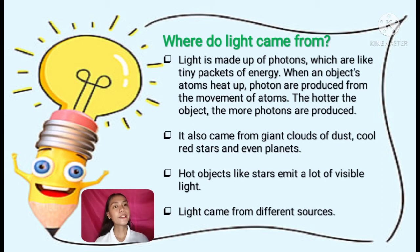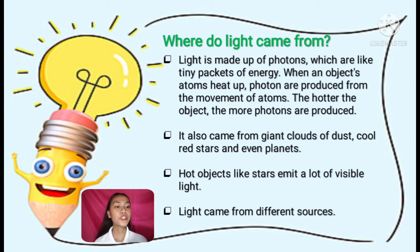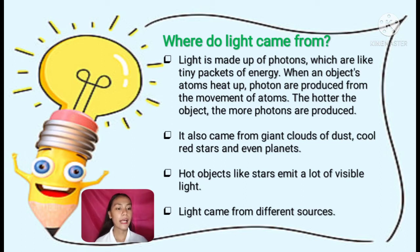Now let us know where light comes from. Light is made up of photons, which are like tiny packets of energy. When an object's atoms heat up, photons are produced from the movement of atoms. The hotter the object, the more photons are produced. Light also came from giant clouds of dust, cool red stars, and even planets. Hot objects like stars emit a lot of visible light.